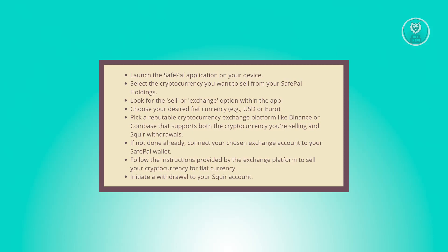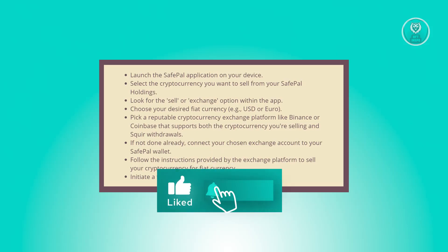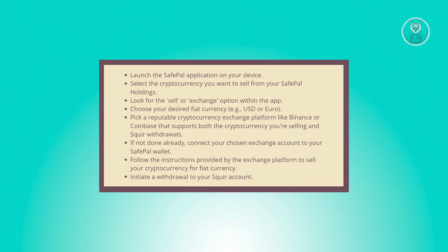Next, choose the fiat currency. Indicate your preferred fiat currency for the transaction, such as USD or Euro, depending on your preference. Then, select a reputable exchange platform — pick a well-established cryptocurrency exchange like Binance or Coinbase, and ensure the chosen platform supports the cryptocurrency you're selling and allows withdrawals to Skrill.